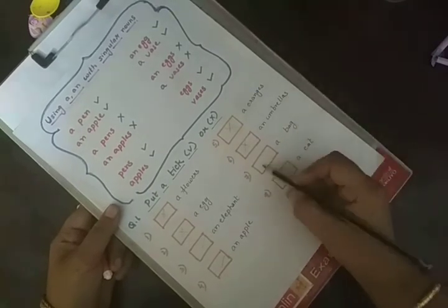A bag. One bag. This is correct. A cat. This one is correct. So hope you will practice these children's worksheets.